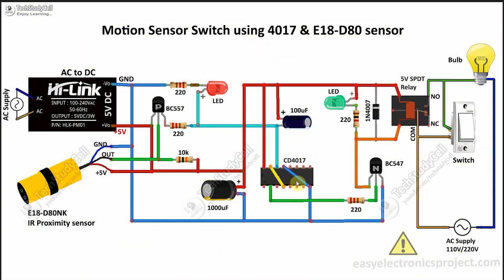In the circuit I have used a 4017 IC. Whenever the IR proximity sensor senses any motion it will generate a clock pulse with the help of a PNP transistor, then the clock pulse will be fed to pin number 14, which is the clock pin of the 4017.